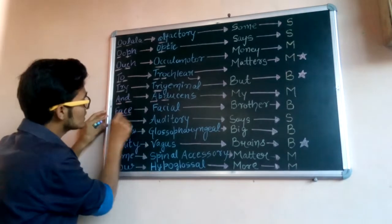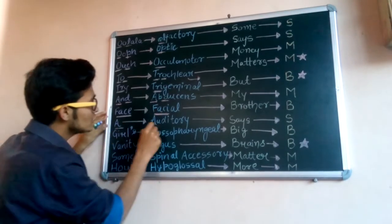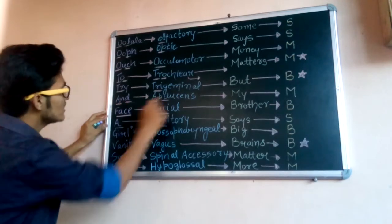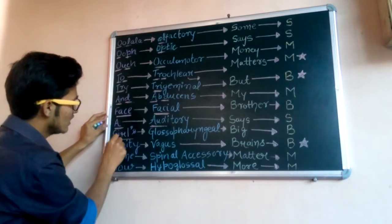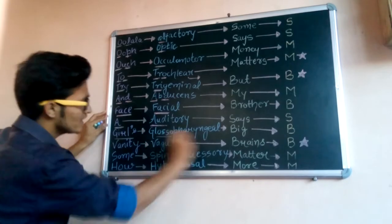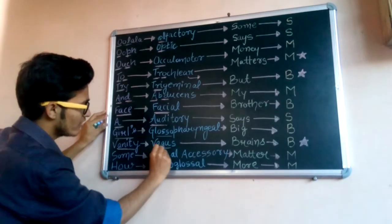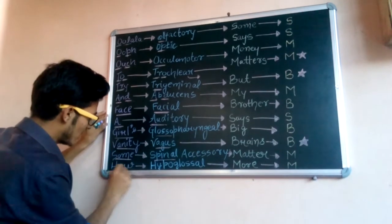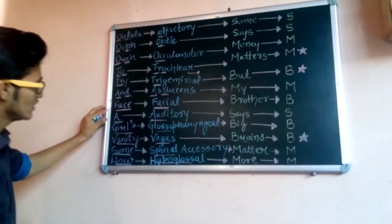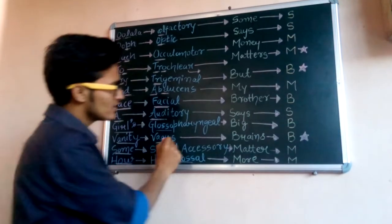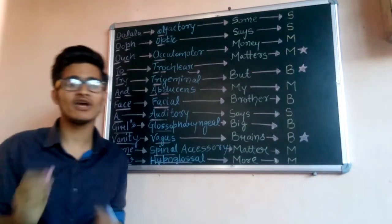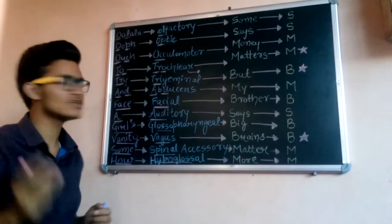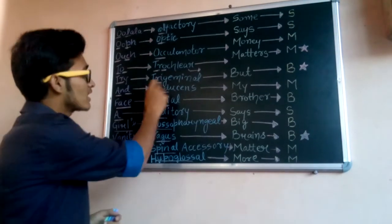'Face' simply means facial nerve. 'A' means auditory — so you need to memorize two nerves here: abducens and auditory. 'Girls' is glossopharyngeal, 'vanity' means vagus nerve, 'some' means spinal accessory nerve, and 'how' means hypoglossal nerve. The vagus nerve is also star-marked because it is the largest cranial nerve.